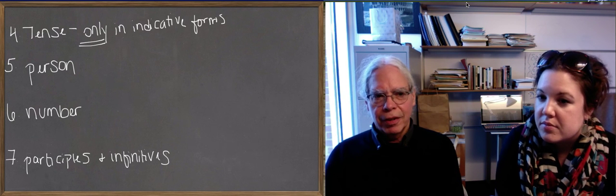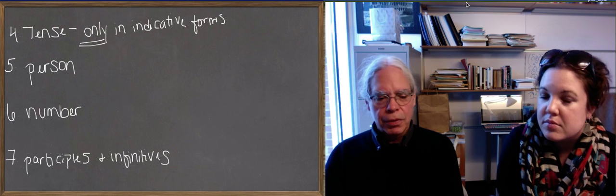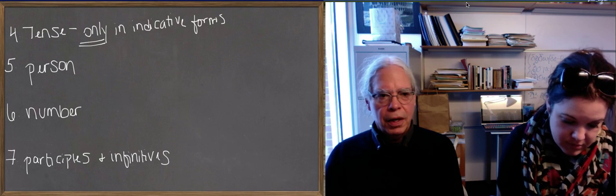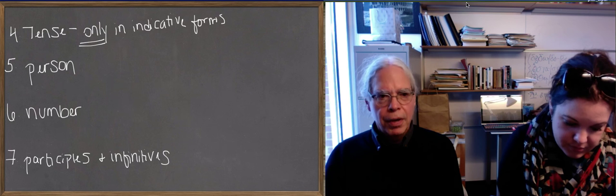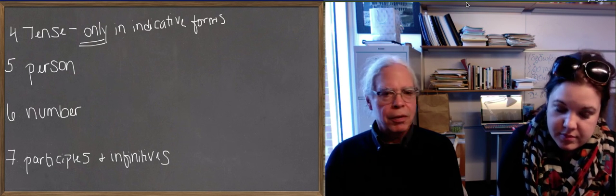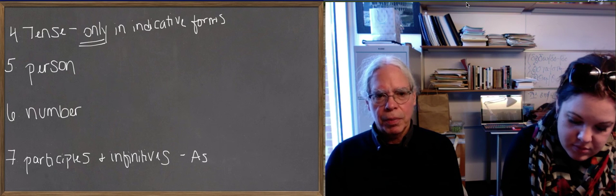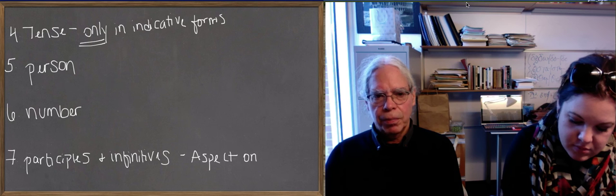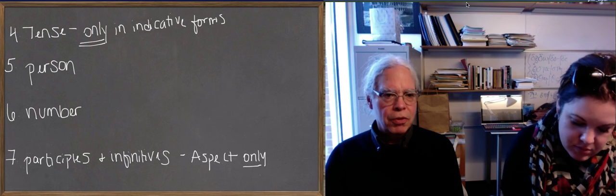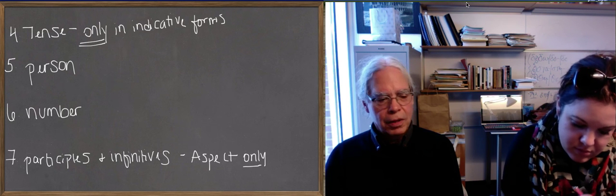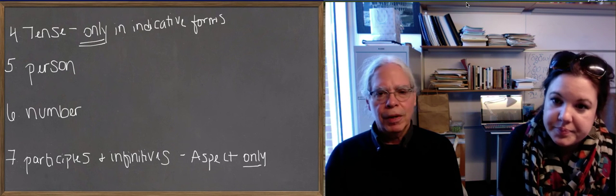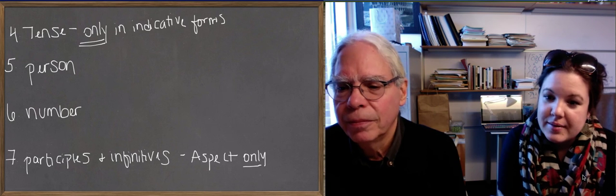The last category of a Greek verb are participles and infinitives, which are related to each other formally in ancient Greek and in their functions. And they have neither person, nor number, nor tense, nor mood. They only have aspect. But they do have, in the case of participles, they do have, instead of person and number, they have gender, number, and case, because participles are actually adjectives. And infinitives don't have any person or any number. They only have aspect. We'll come to them soon. All right. Thank you.